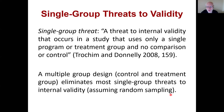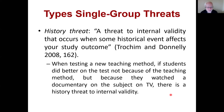There are many threats to internal validity. We can divide them into single group threats, multiple group threats, and social threats. Single group threats occur in a study that uses only one program or treatment group with no comparison or control. A multiple group design — with control and treatment groups — eliminates most single group threats to internal validity, assuming random assignment.